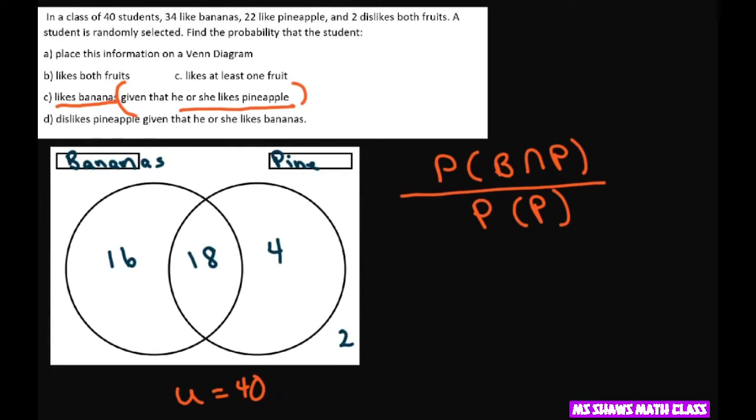So for that one, you're going to get 18. B, we already did this on both fruits. So that's going to be 18 divided by probability of the pineapples is this total. So that's going to be 18 divided by 22, which equals 9 divided by 11.